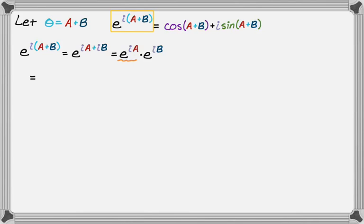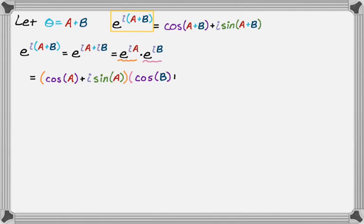Applying Euler's formula to each factor: e to the i·a becomes cosine of a plus i sine of a, and e to the i·b becomes cosine of b plus i sine of b. So we now have the product of two binomials: the quantity cosine a plus i sine a, times the quantity cosine b plus i sine b.